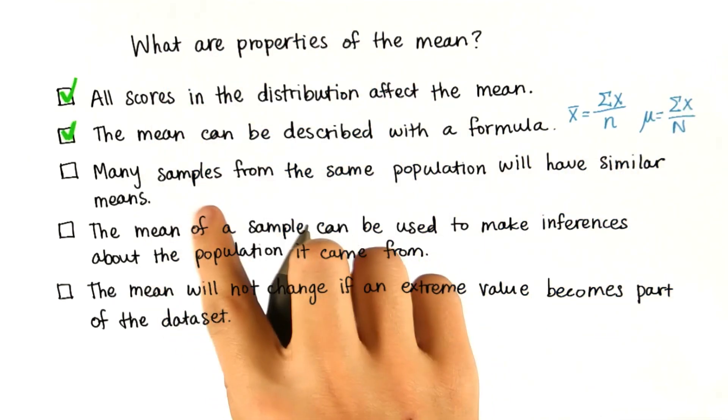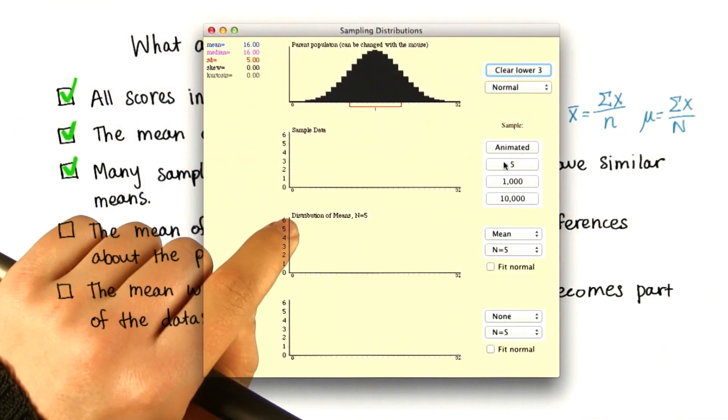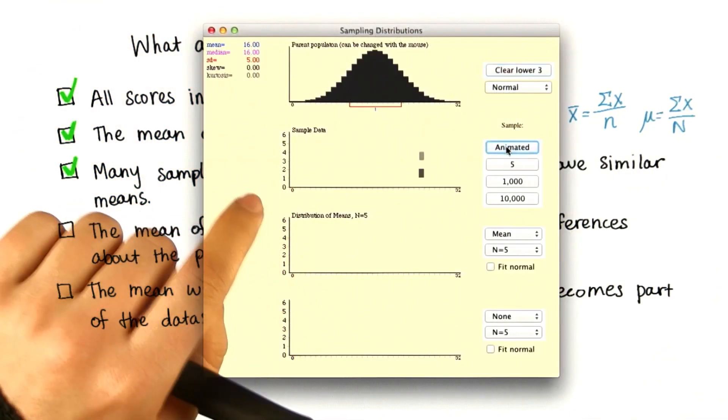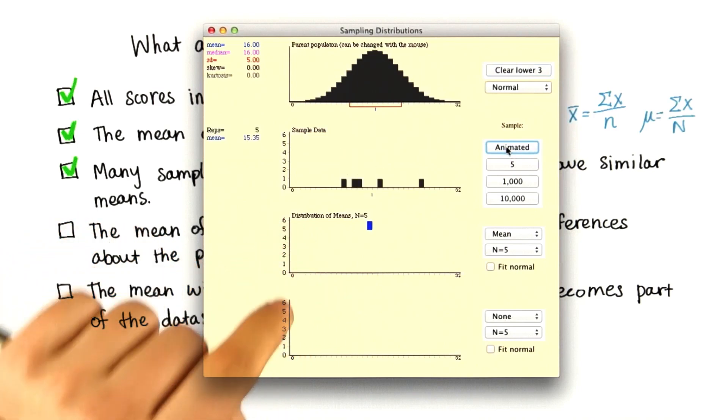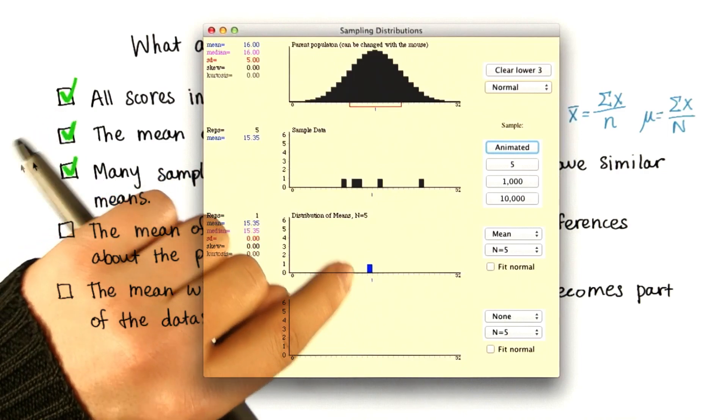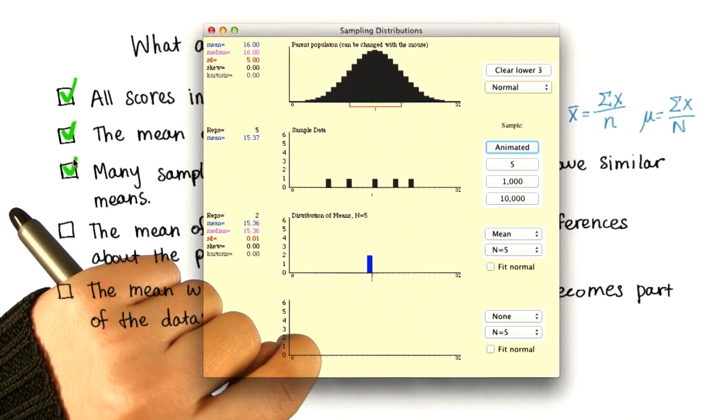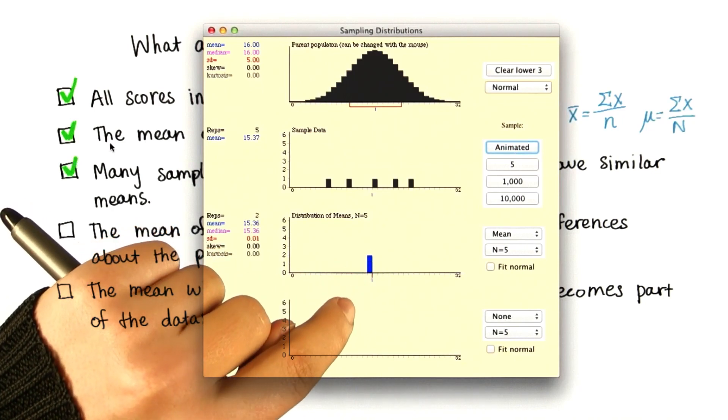This is also true, that many samples from the same population will have similar means. For now, I'll just show you this applet again, where if we pick a sample of size five, we get that the mean is roughly in the middle. And if we do it again, we get that the mean is roughly in the middle.